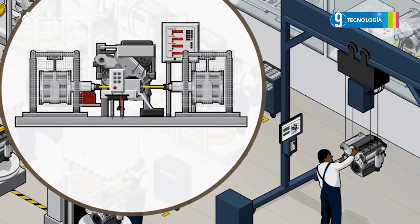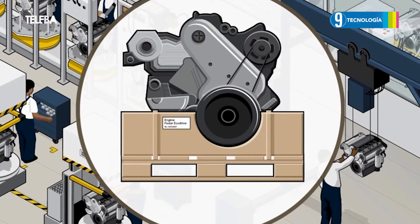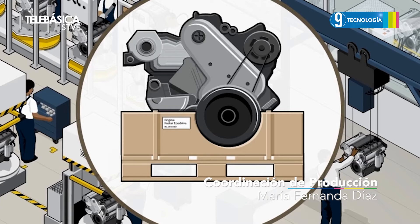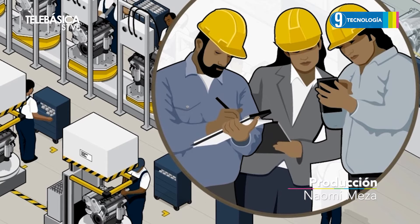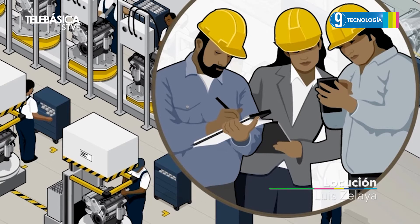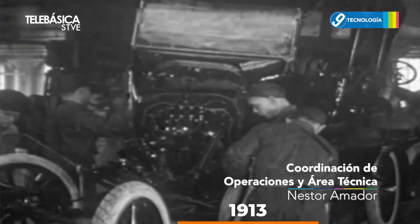Este sistema logra aumentar la cantidad y calidad. Los trabajadores estaban especializados por área: uno armaba, otro ensamblaba, otro pintaba, y así sucesivamente. Era mucho más rápido que uno solo realizara todo el trabajo como en el sistema anterior. Y al ser especialistas, su salario aumentó.